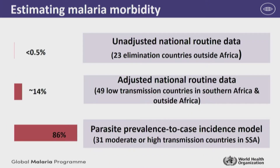The methods to estimate malaria morbidity — there are three main ones. The first, applying to about 23 countries, is just the use of actual data. These are countries with extremely low malaria burden, contributing about 0.5% of the global malaria burden. Then there's a subset of about 49 countries, most outside Africa but a few in southern Africa, which have low malaria burden and reasonably good surveillance systems but have gaps with respect to the public sector not capturing all events, as well as incomplete diagnosis and reporting rates.